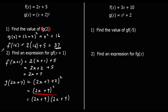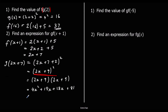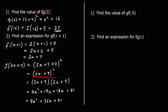Just for completeness, expanding (2x plus 9) squared: 2x times 2x is 4x squared, 2x times 9 is 18x, 9 times 2x is 18x, and 9 times 9 is 81. So we get 4x squared plus 36x plus 81. As mentioned, leaving the answer as (2x plus 9) squared is perfectly valid, but if you carry on, that is what you'd get.